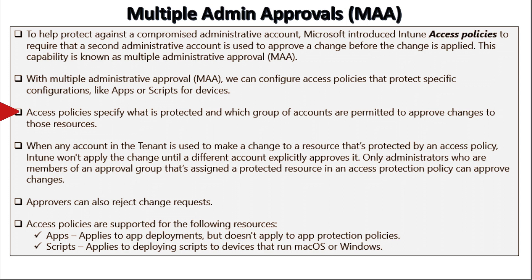We can configure access policies that protect specific configurations like apps or scripts for devices. An access policy specifies what is protected and which group of accounts are permitted to approve changes to those resources. When any account in the tenant makes a change to a resource protected by an access policy, Intune won't apply the changes until a different account explicitly approves them. Only administrators who are members of an approval group assigned to a protected resource can approve the changes.